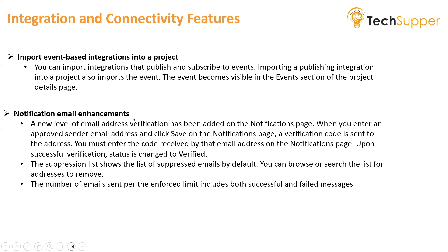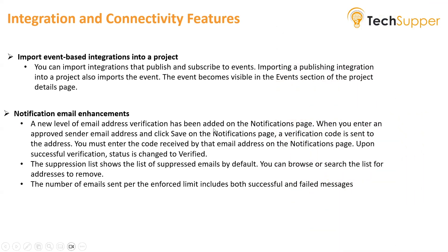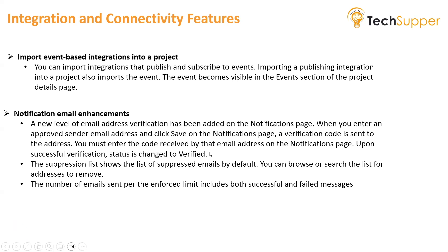Next, notification email enhancements. A new level of email address verification has been added on the notification page. When you enter an approved sender email address and click Save, a verification code is sent to that address. You must enter the code received on the notifications page, and upon successful verification the status changes to 'verified'. Earlier there was no mechanism to verify the sender email address — you could type a dummy address. Now you must have a working email address to send notifications.